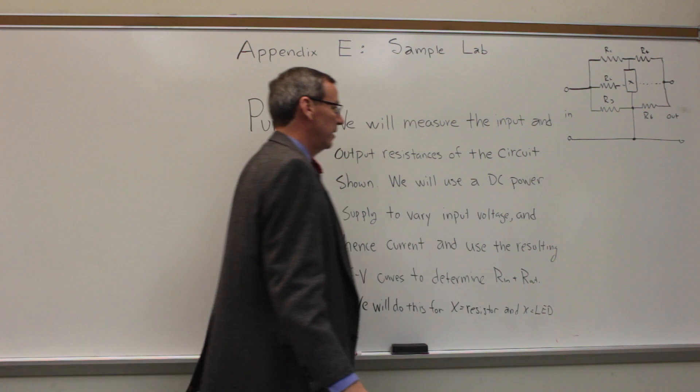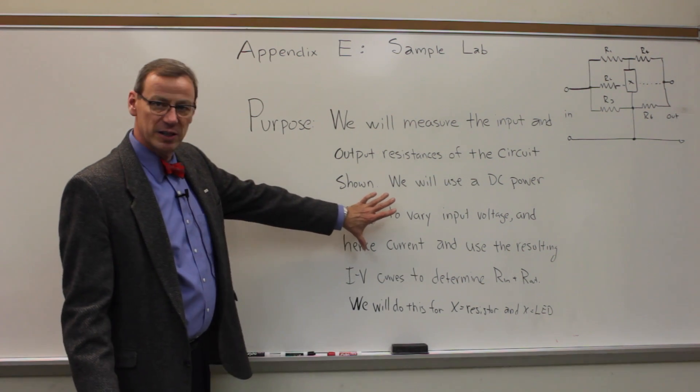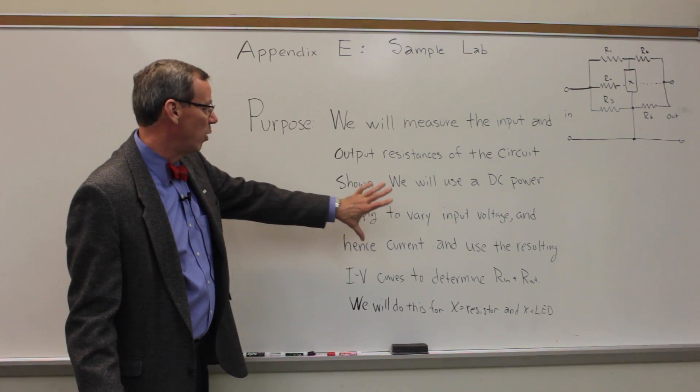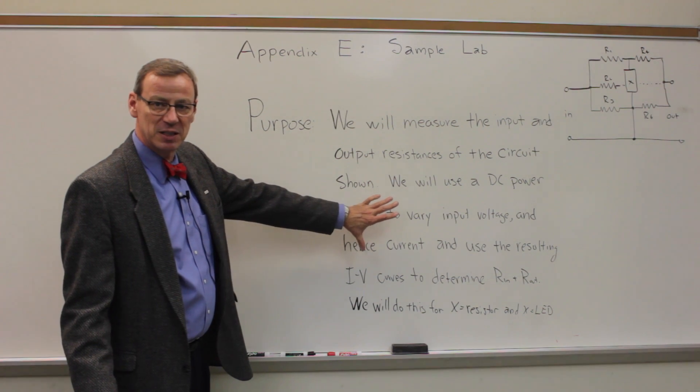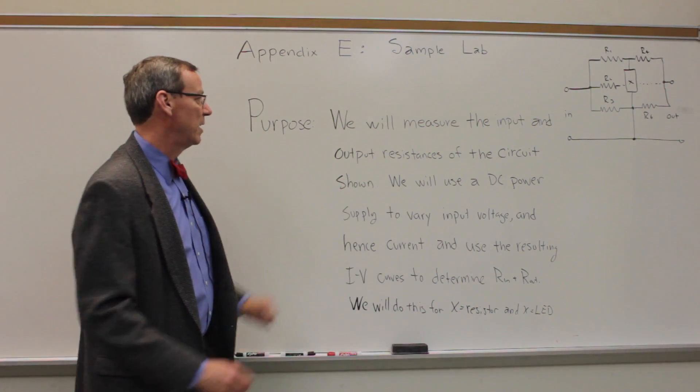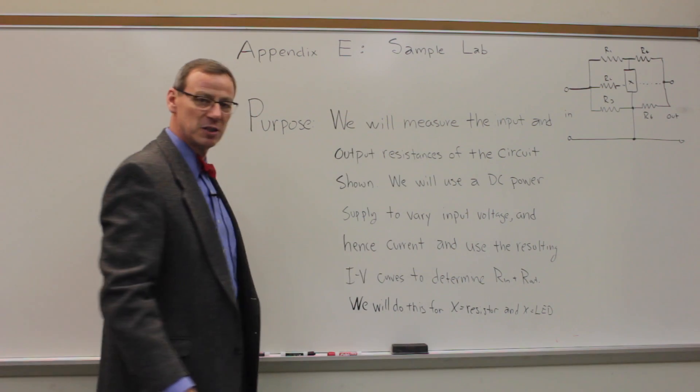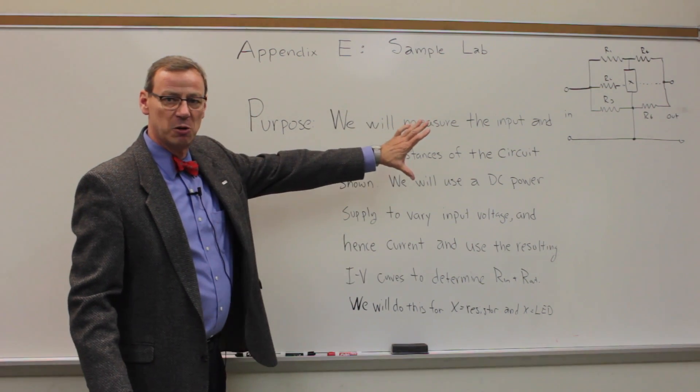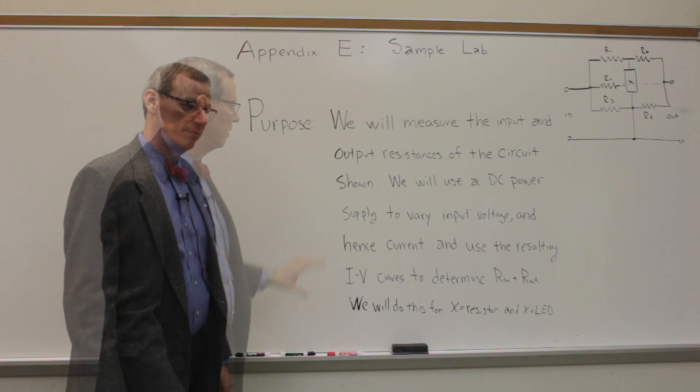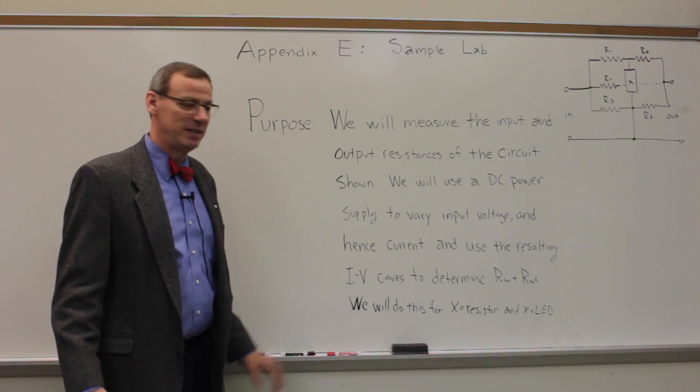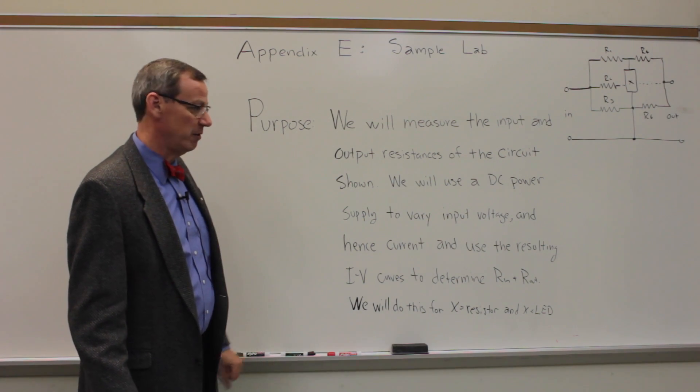And then we're going to make IV curve to determine R_in and R_out. And we're going to do this with two different things for X, a resistor and an LED. So all of that is laid out here. So now you have a pretty good idea of what's going to happen in the lab. It doesn't give us the details of what we're going to do, but it's sort of the big picture. And because this circuit is complicated enough and it's common to this whole lab, we list it there as well. The one that's written in Appendix E is also quite good. It's slightly different from this.